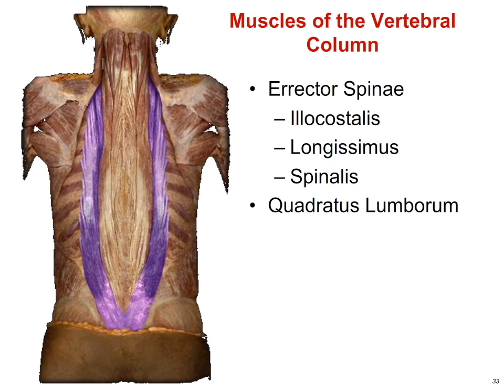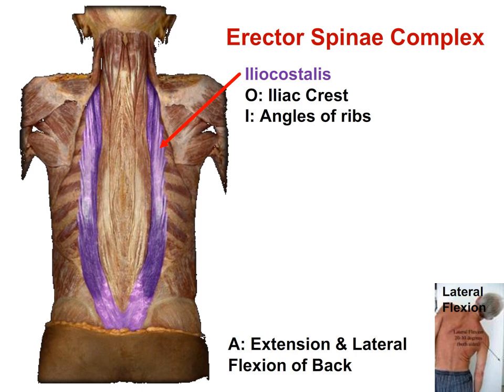Now we're going to move on to the muscles of the posterior vertebral column, including the erector spinae muscles and the quadratus lumborum. The erector spinae complex consists of three muscles. First is the iliocostalis, which originates on the iliac crest and inserts on the angles of the ribs in the thoracic region — ilio refers to ilium and costalis to the ribs, with origin listed first and insertion second. Its function is extension of the back, and also lateral flexion when only one side is contracted.